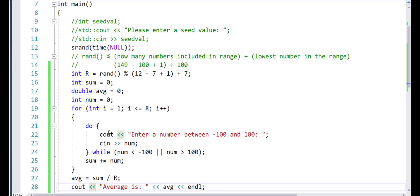Outside I have a for loop, inside I have a do-while loop. So enter a number within this range, accept the number. If the number is less than negative 100, or the number is greater than 100, it will go back and ask for the input again. If it's a valid number, it will come down here and add the number to the sum.